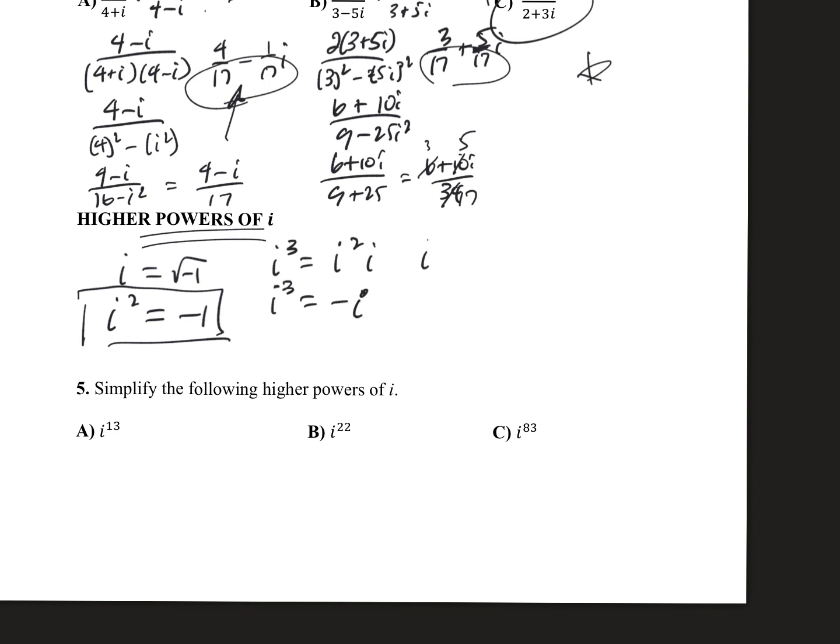If we go to i to the fourth, well, this breaks down into i squared times i squared, which is negative 1 times negative 1. It turns out that i to the fourth is equal to 1. I'll highlight that in a moment.